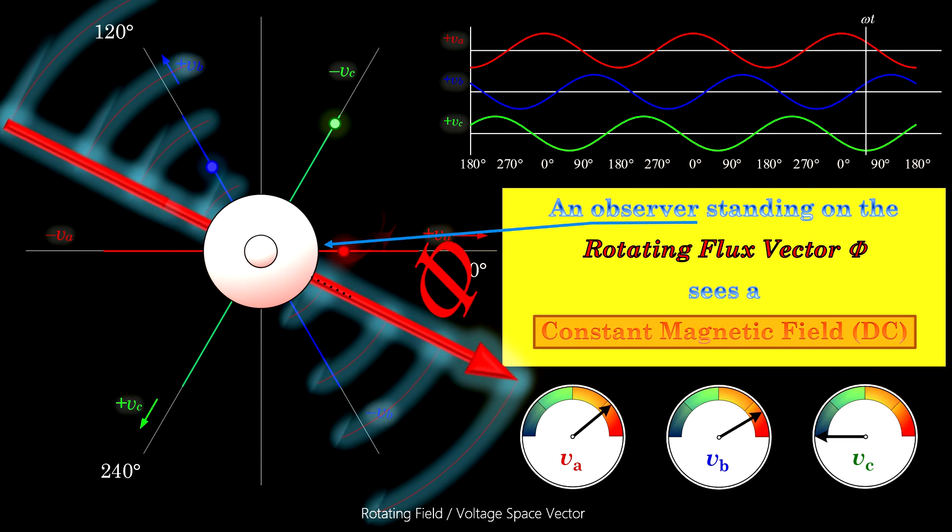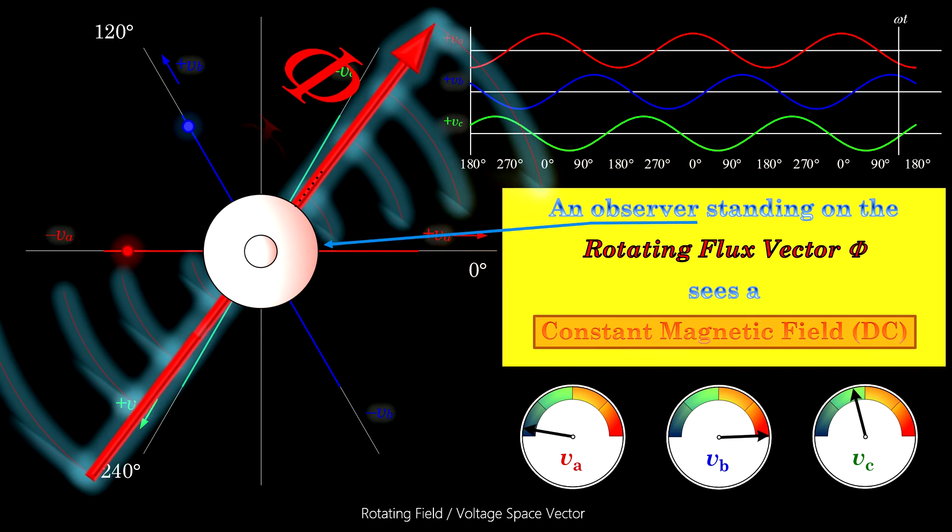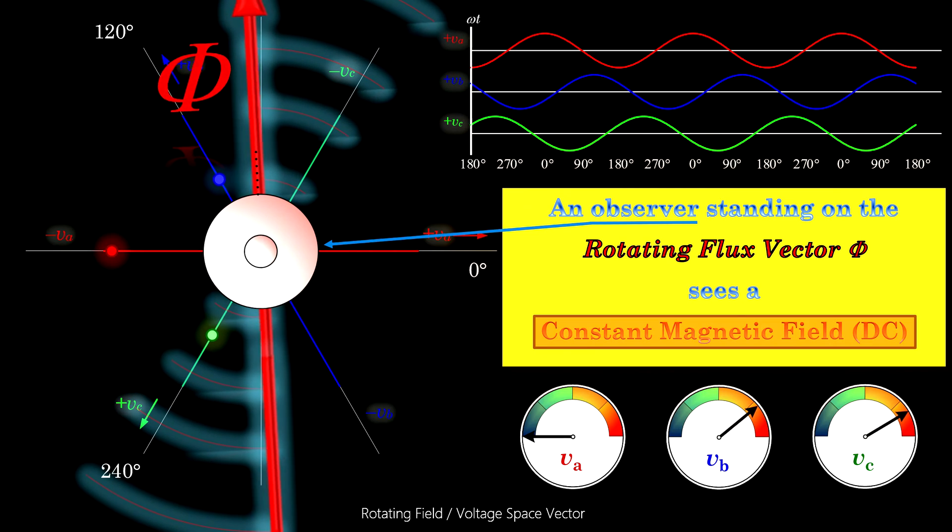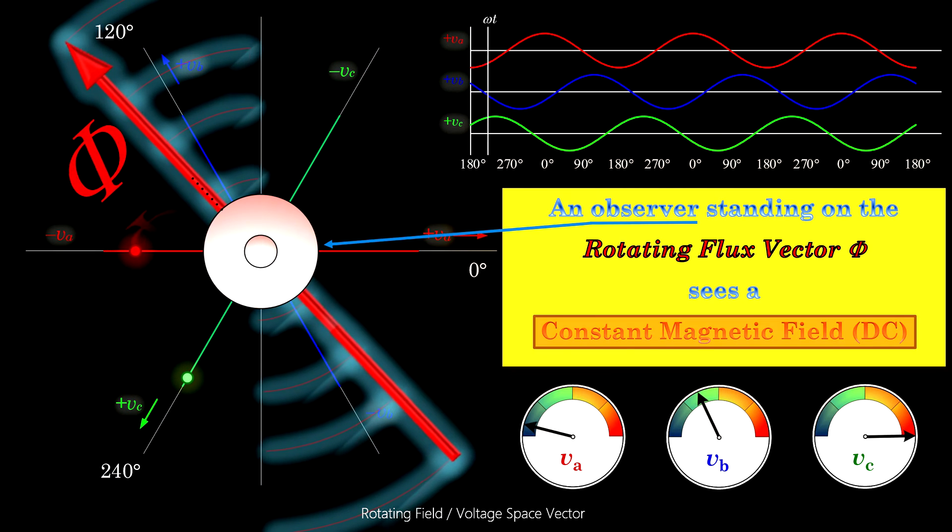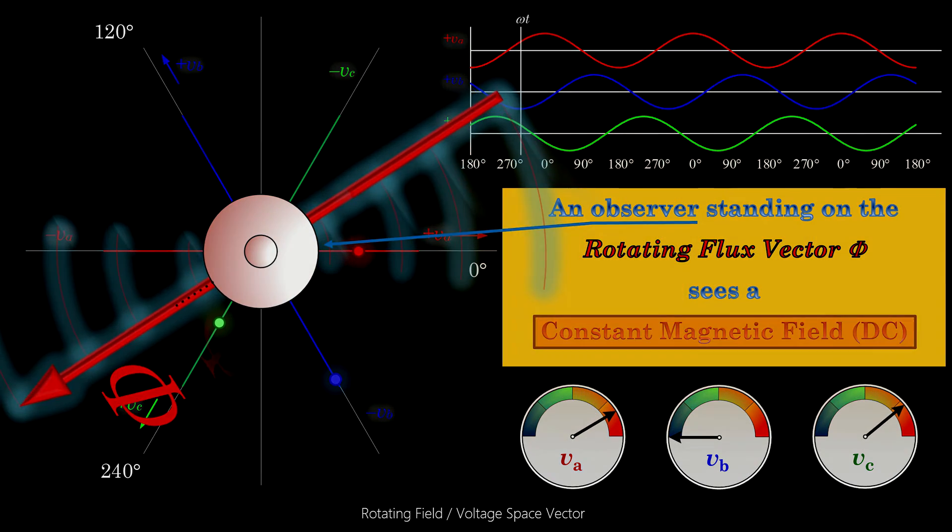This rotating magnetic field that we of course can see if looking from the outside of the machine, but is stationary when looked from the inside, is the foundation of all our three phase electric machines.